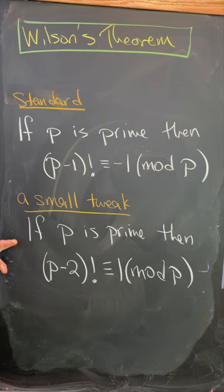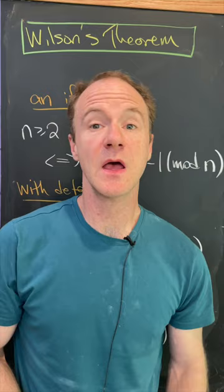A small tweak of that would be if p is prime, then p minus 2 factorial is congruent to 1 mod p. But here's some other versions.